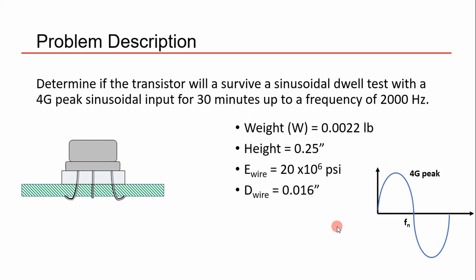Here's the problem we're going to analyze: determine if a transistor will survive a sinusoidal dwell test with a 4G peak sinusoidal input for 30 minutes up to a frequency of 2000 hertz. We're going to do this analytically, but in practice you would normally run a sine sweep test to determine the natural frequency, then put in a sinusoidal input and observe what the component does — run it until it fails.